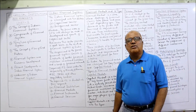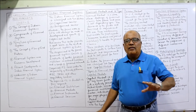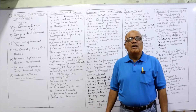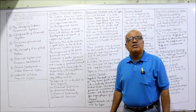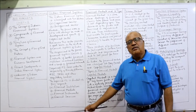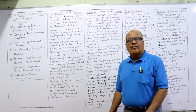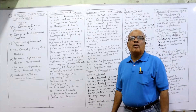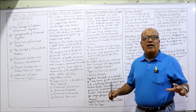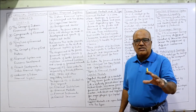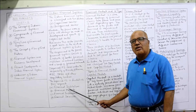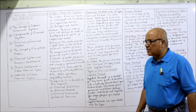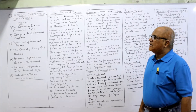The organized financial system is divided into four components. The first is financial institutions, the second is financial markets, the third is financial instruments, and the fourth is financial services. These four are called the components of the financial system — not only in India, but in any country of the world where a financial system exists.